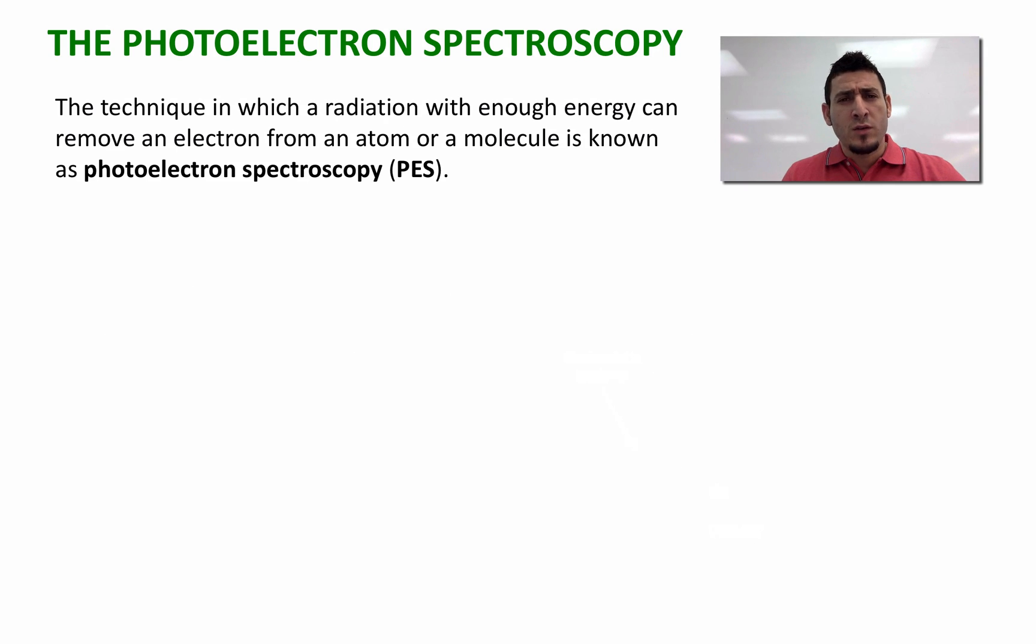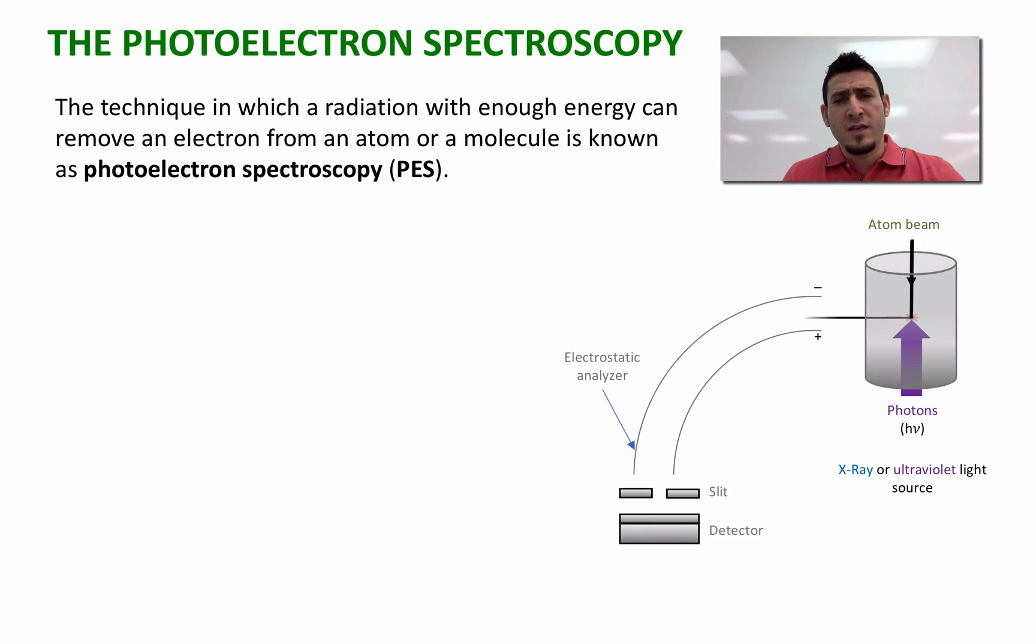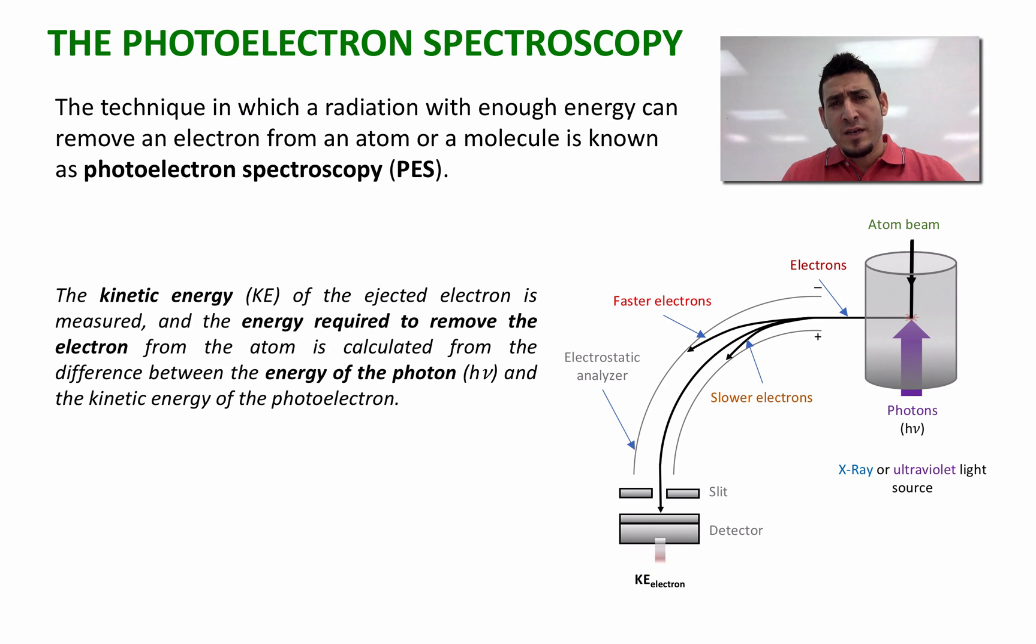Let's take a quick look at a photoelectron spectrometer, where the atom or molecule's beam is irradiated with a light with enough energy to remove electrons. The removed electrons reach a detector where their kinetic energy is calculated. Knowing the kinetic energy of the removed electrons and the energy of the incident photon, we can calculate the binding energy of the electrons using the following expression, where E₀, which is the binding energy of the electrons, is equal to hν, which is the energy of the incident photon, minus the kinetic energy of the electron.